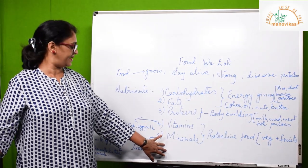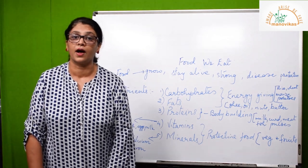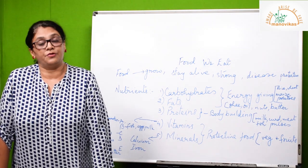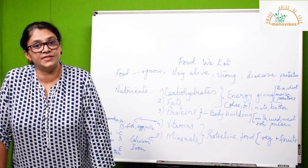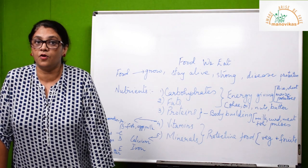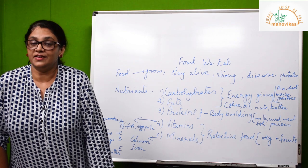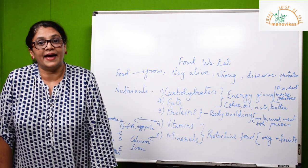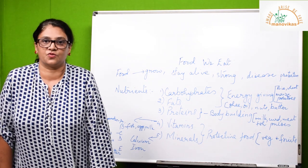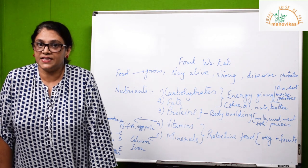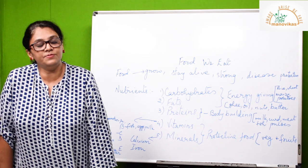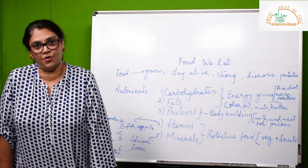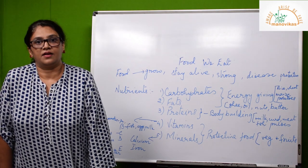Other than these five nutrients, our body also requires water and roughage. Seventy-five percent of our body is made up of water, so water is very important. One should drink at least eight glasses of water. Water helps in digestion and helps to remove toxins and waste from our body.